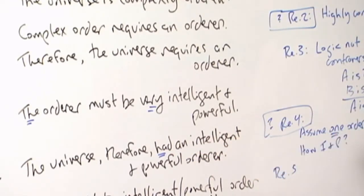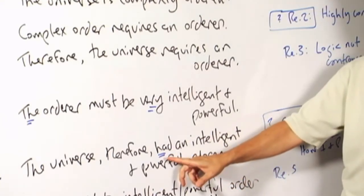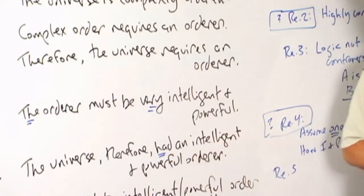Do we say that the universe has an intelligent and powerful orderer? If we say that, then we're assuming that the intelligent and powerful orderer still exists and is performing a function here. Or do we say, as I've put here, that the universe had an intelligent and powerful orderer,